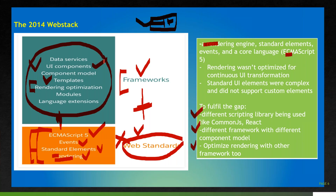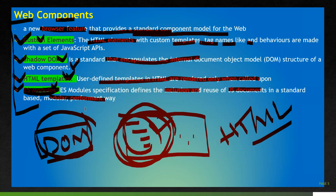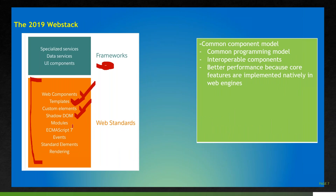The 2019 web stack supports shadow DOM to encapsulate the internal DOM of my component, modules, ECMAScript 7, events, standard elements, and rendering — including rendering mutation and rendering optimization. Everything can now be controlled by web standards alone. Only the specialized things we need go into the framework layer.